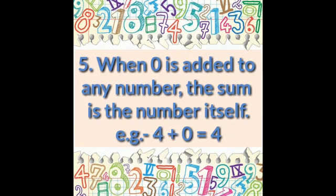When 0 is added to any number, the sum is the number itself. Example, 4 plus 0 is equal to 4.